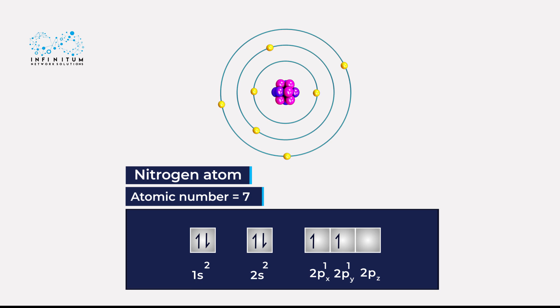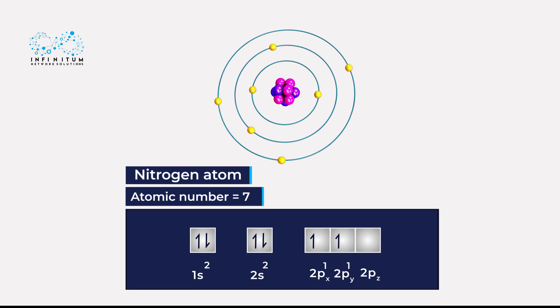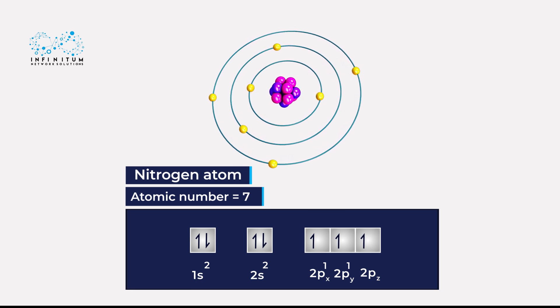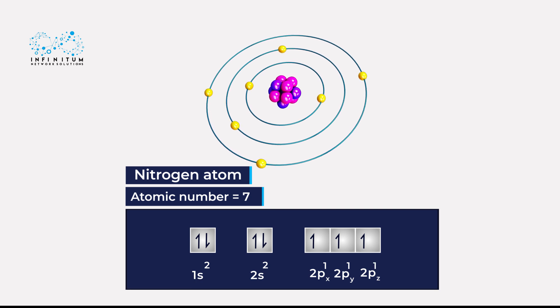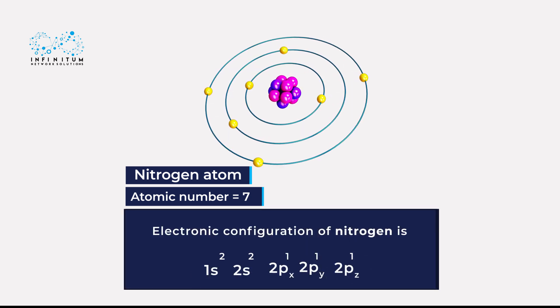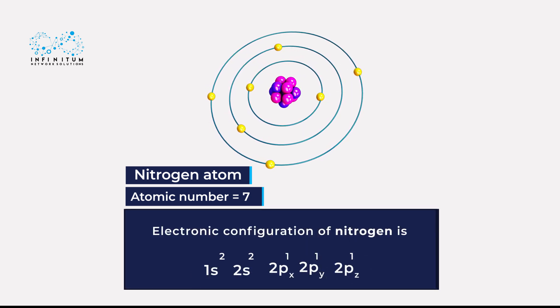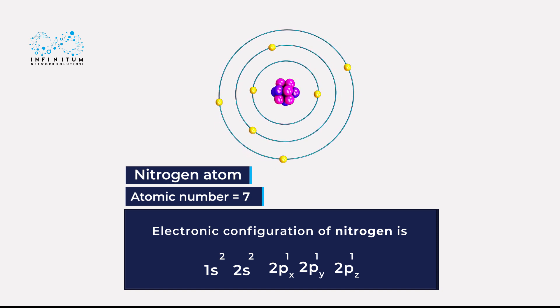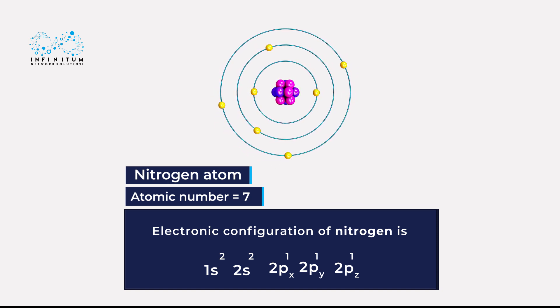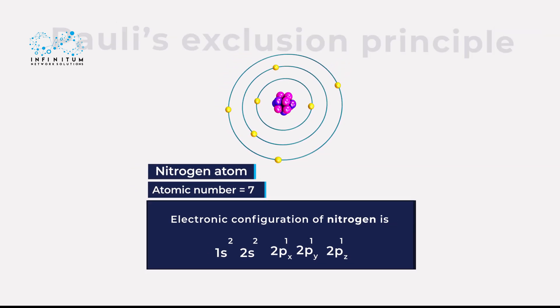The seventh electron will enter only in 2pz, but cannot enter into 2px or 2py. This configuration is 1s² 2s² 2px¹ 2py¹ 2pz¹.